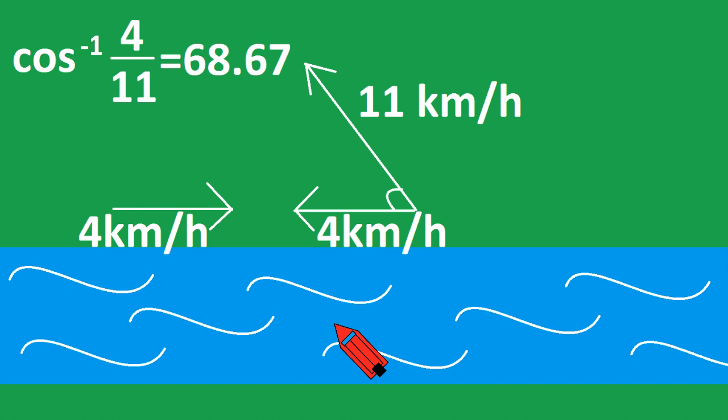For extra credit, let's figure out what the speed we were traveling across the river was. So we just use the Pythagorean theorem, and that's just a squared plus b squared equals c squared. So we're going to rearrange that, so it's c squared minus a squared equals b squared.